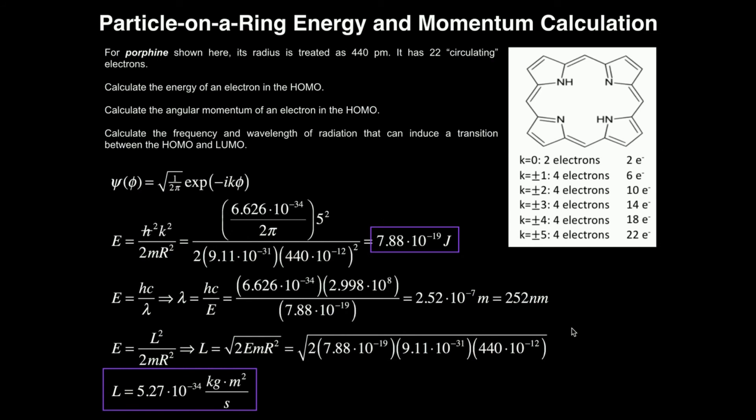In other words, what this means is if you took porphine and you shone light on it with a wavelength of 252 nanometers, you would get promotion of an electron from the HOMO into the LUMO, theoretically.